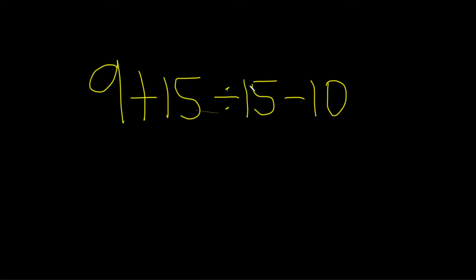Here we have one division right in the middle, so the first step is to do that. We keep the 9, we keep the plus, and just focus on this division. 15 divided by 15 is 1. And then we keep the minus, we keep the 10.